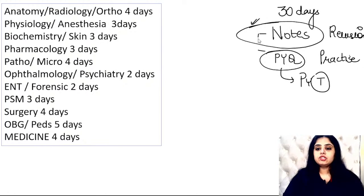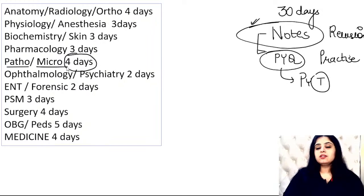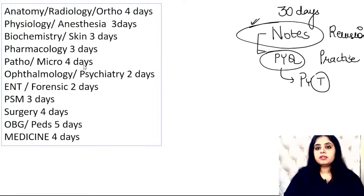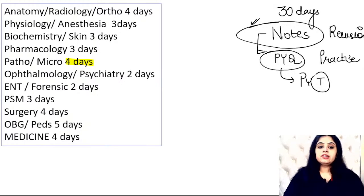If notes revision is not fully done, pick up previous year topics — at least you'll know that apoptosis has come five or six times, so you know what to revise from your notes. For example, if I give you four days for path and micro, you can do two days path and two days micro, or divide every day as half-day pathology and half-day microbiology — up to you, whatever avoids boredom and maintains maximum efficiency.